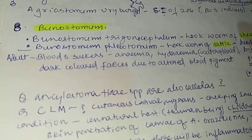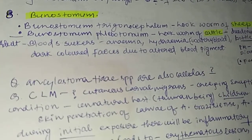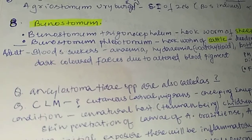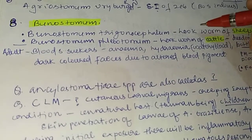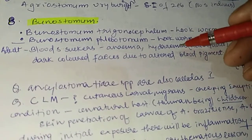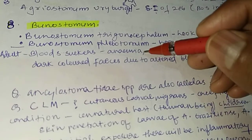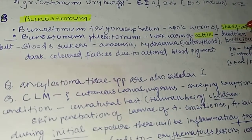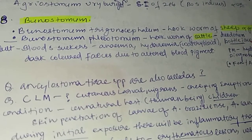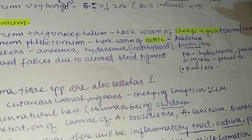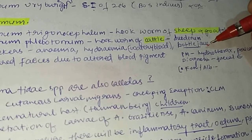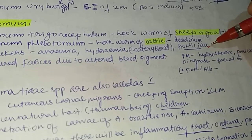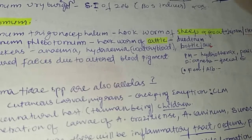The adult worms are bloodsuckers. Because of this blood-sucking characteristic, the affected host will develop anemia and hydremia. Hydremia is the watery blood, and because of the loss of blood protein, it eventually leads to the bottle jaw condition in the affected host.